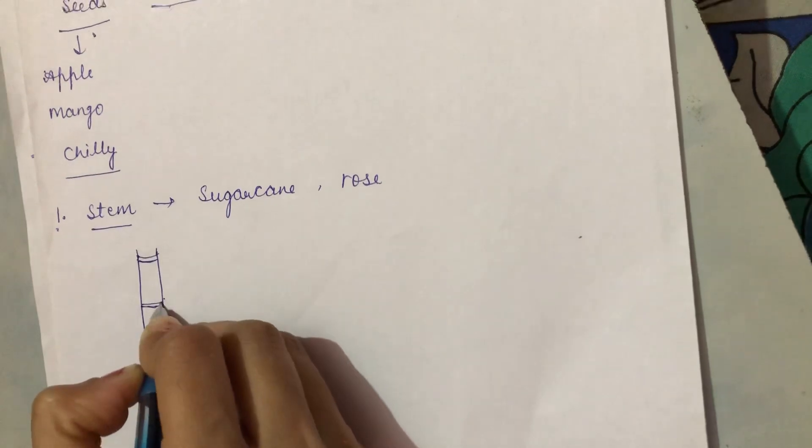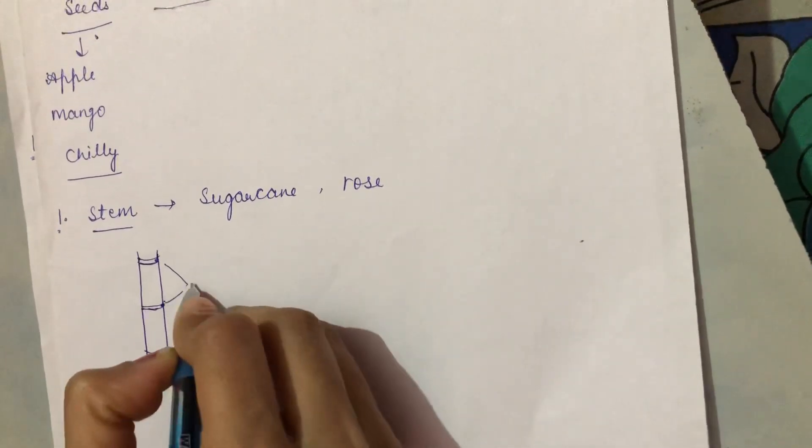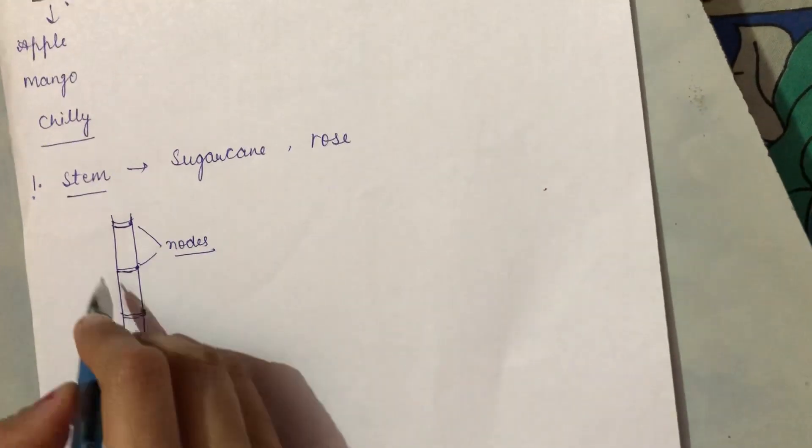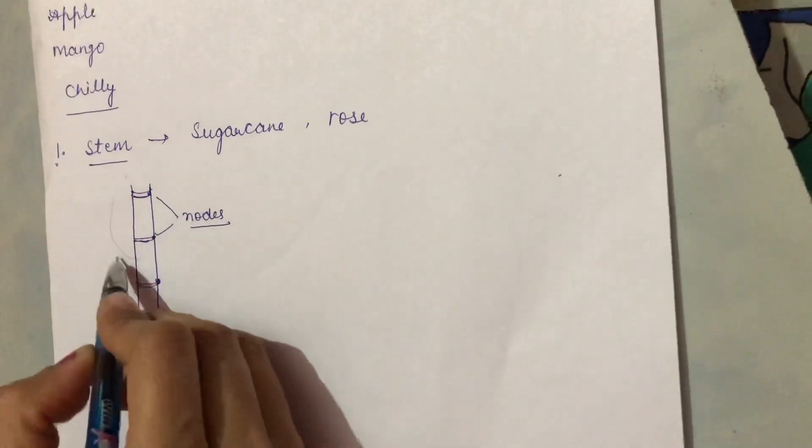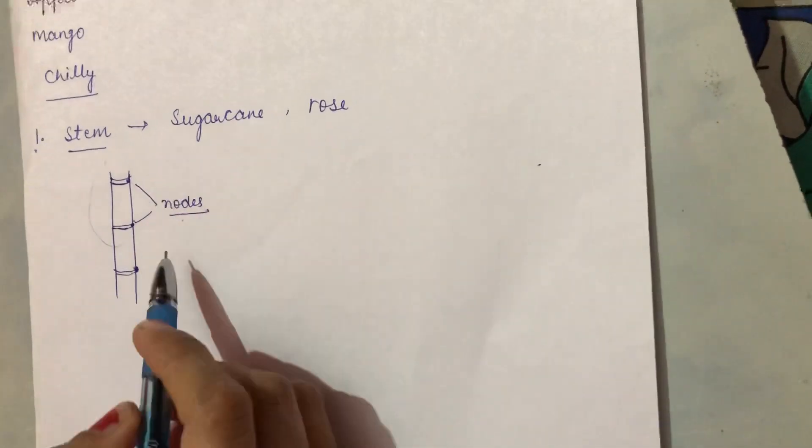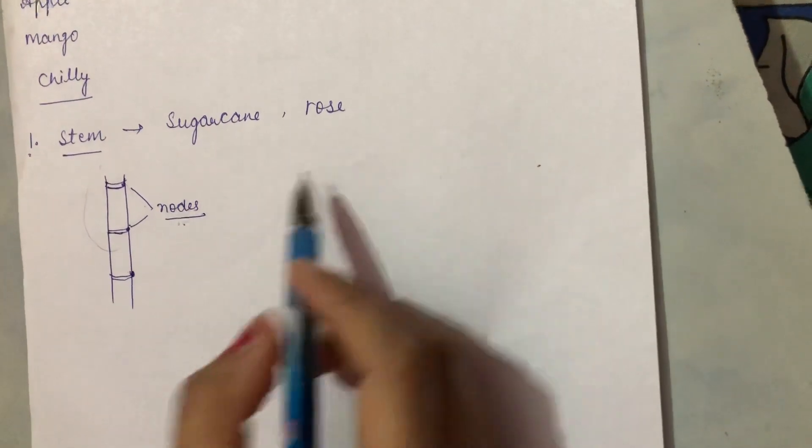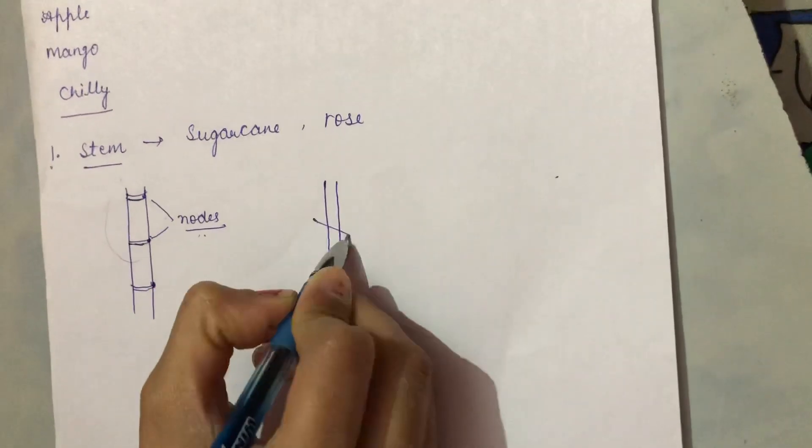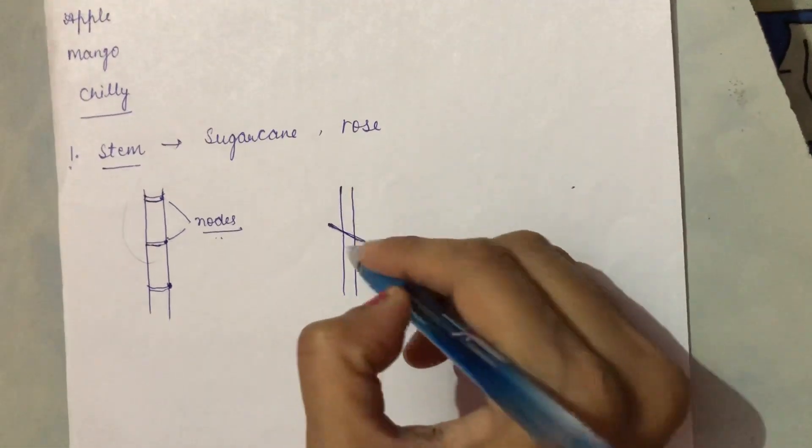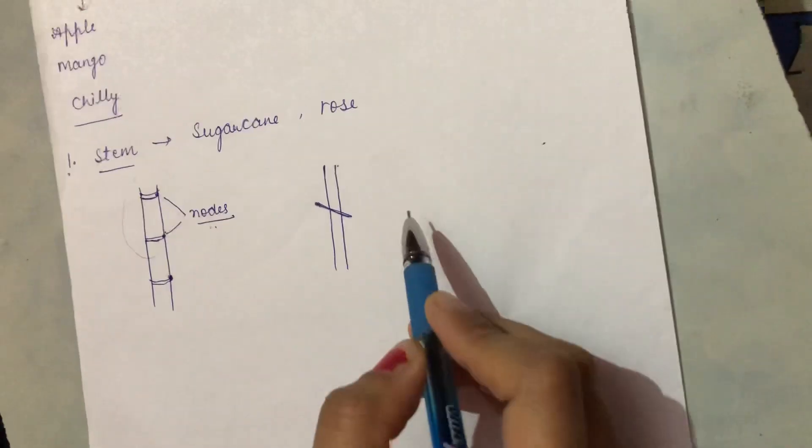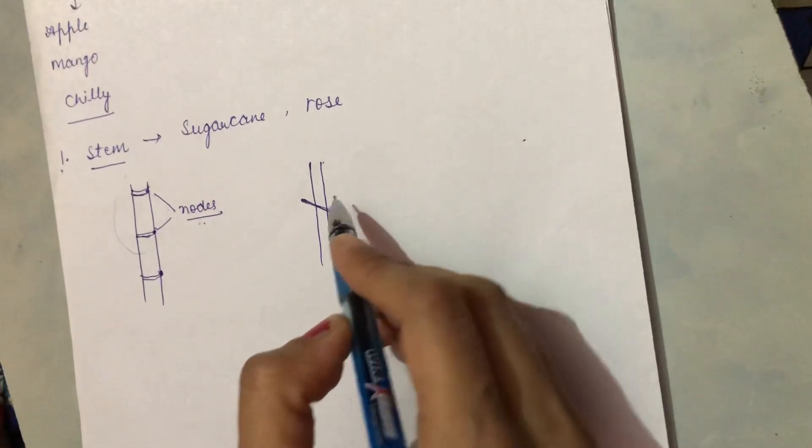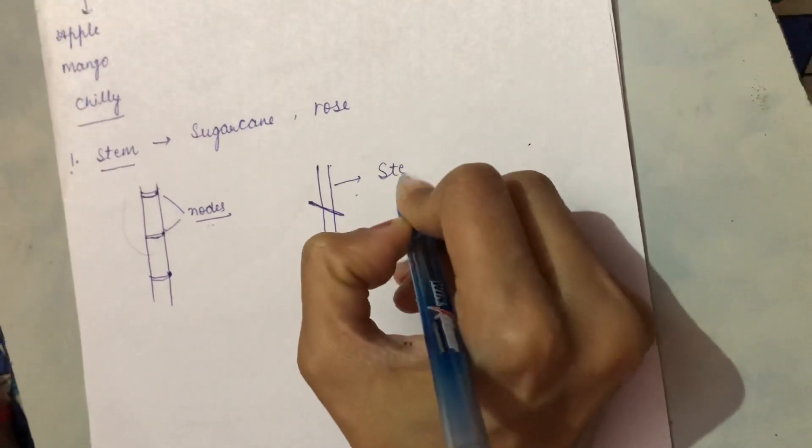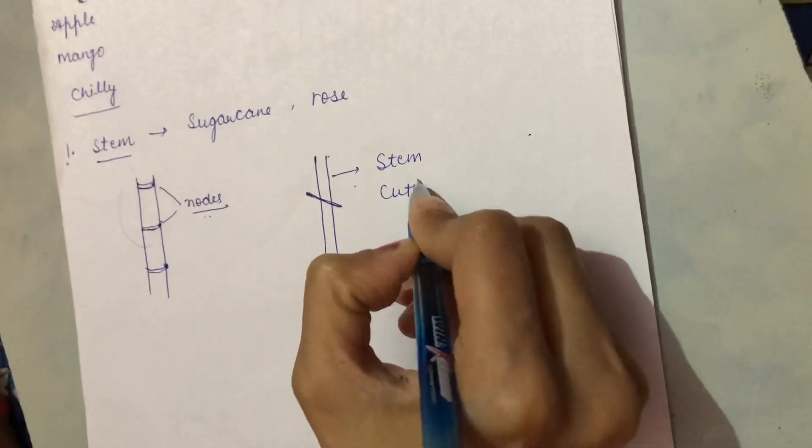And these parts are called the nodes. When you grow a piece of sugarcane in soil having nodes, this can form a new plant. And if we talk about stem, you all know that when a piece of stem of rose is cut and grown in soil, this can also be grown into a new plant.